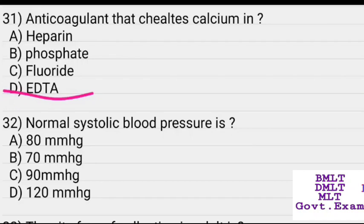What is the normal systolic blood pressure? Options: 80 mmHg, 70 mmHg, 90 mmHg, 120 mmHg. Answer: 120 mmHg.